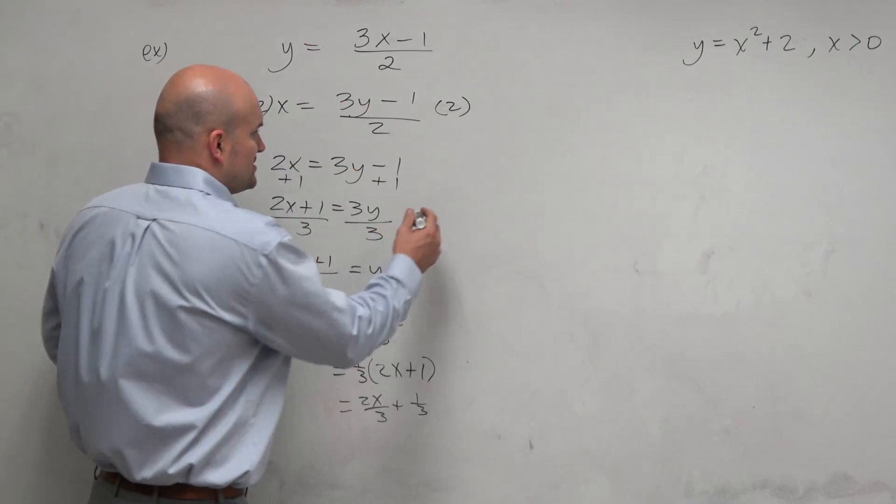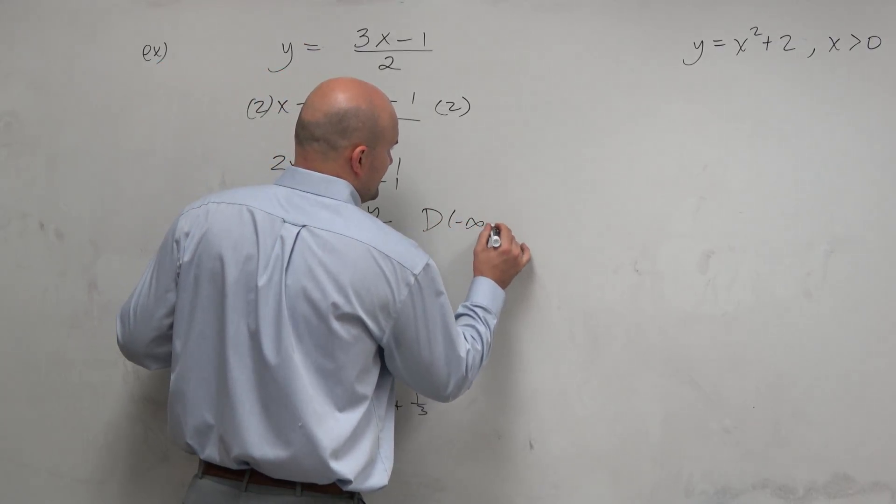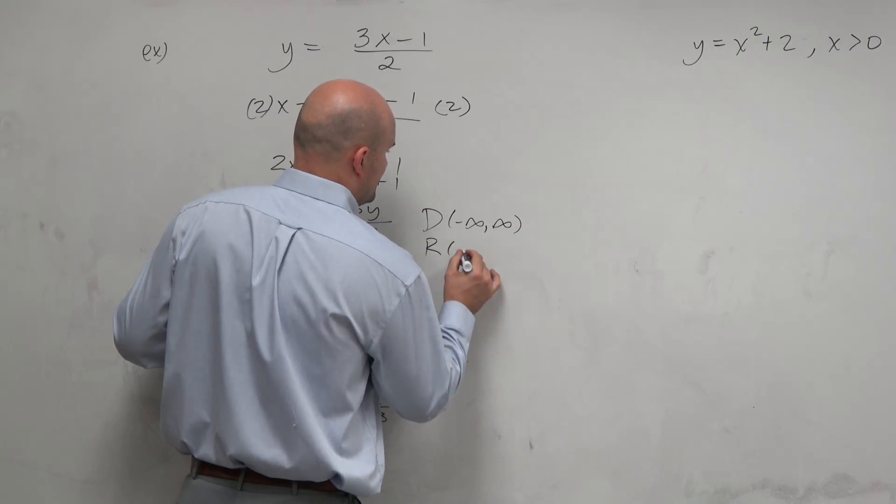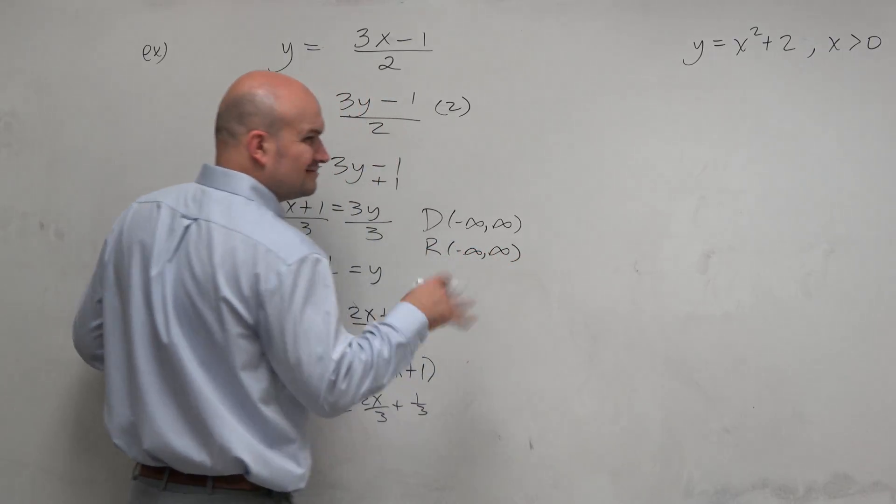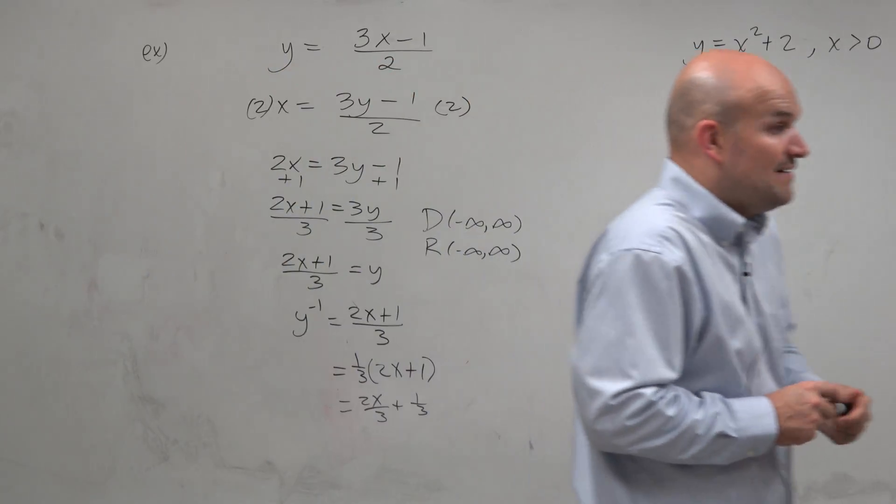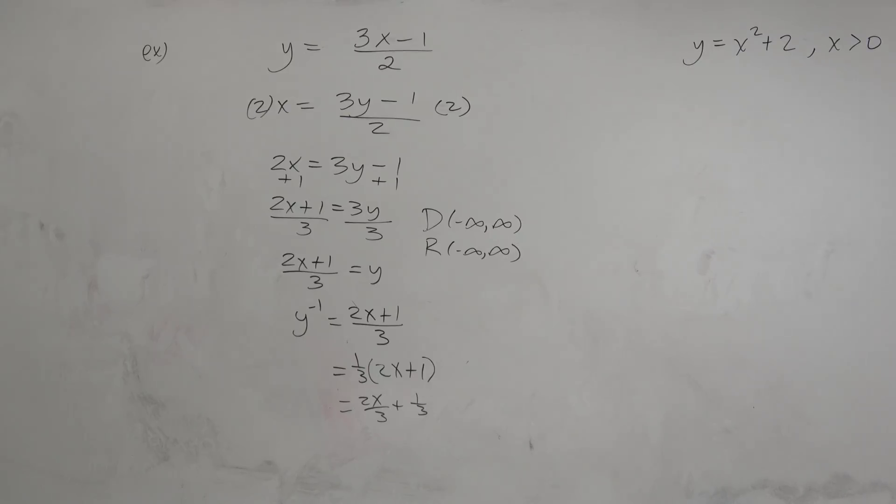It's all real numbers. All real numbers. So I just say domain, all real numbers. Range, all real numbers. I'm not going to. I don't need to. Now, obviously, if I need to find the inverse, I find the inverse.